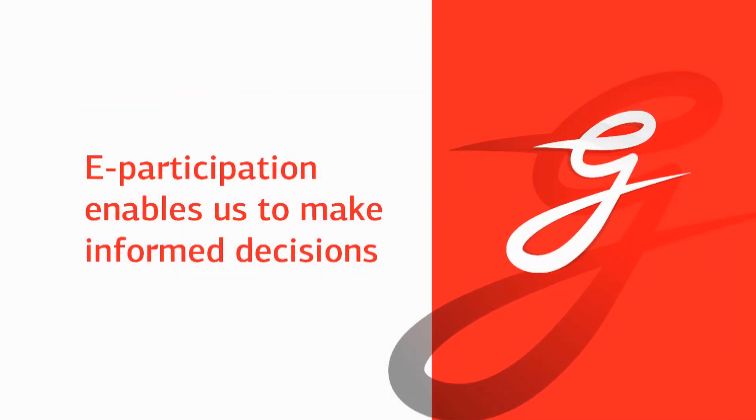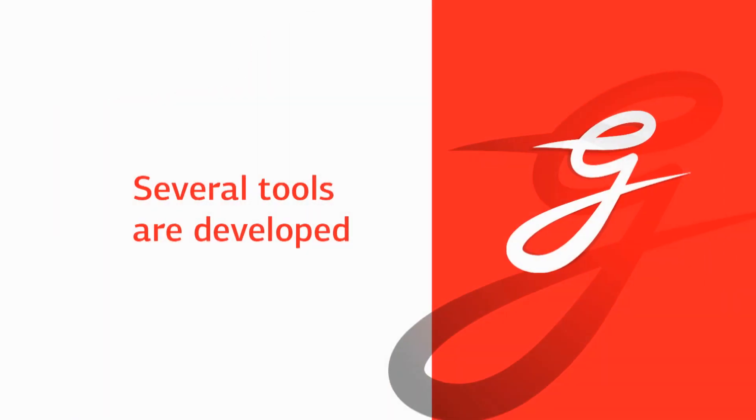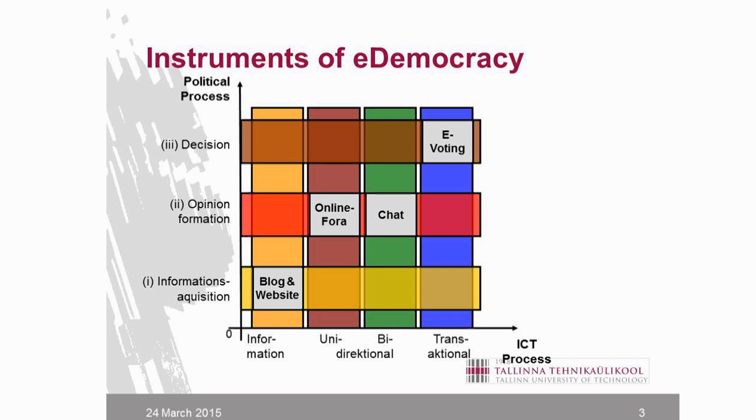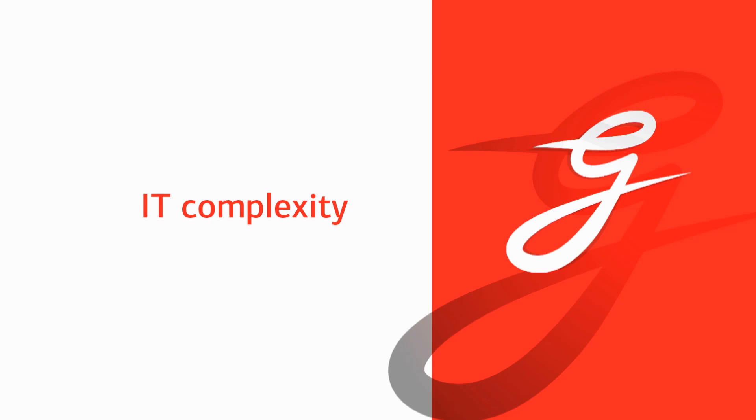E-democracy and e-participation really enables us to make more informed decisions and follow our interests most fully. Over time, we have developed several kinds of tools that can be categorized according to two dimensions. On the one hand, IT complexity — ranging from a simple process of providing information, to a communication process that can be unidirectional or bidirectional, to a transactional process where things are actually changed in databases.